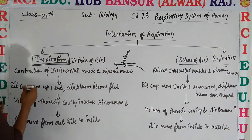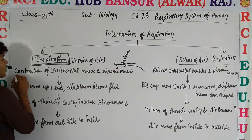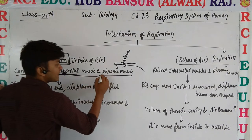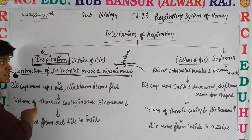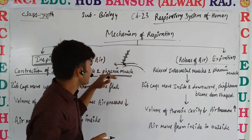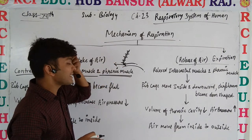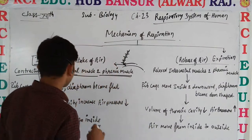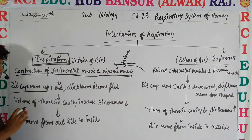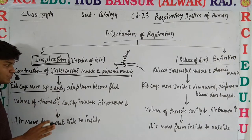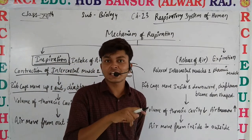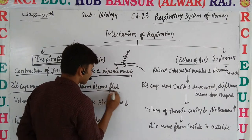Let's recap the physical process of inspiration. The intercostal muscles — found between the ribs — and the phrenic muscles — associated with the diaphragm — both contract. Due to contraction, the rib cage moves upward and outward, and the diaphragm, which is normally dome-shaped in normal condition, becomes flat.